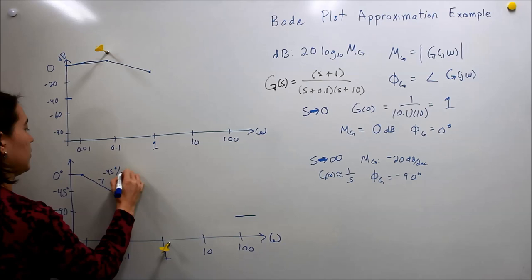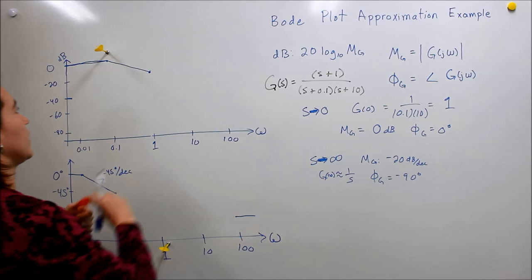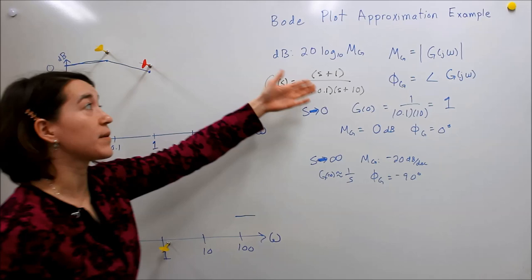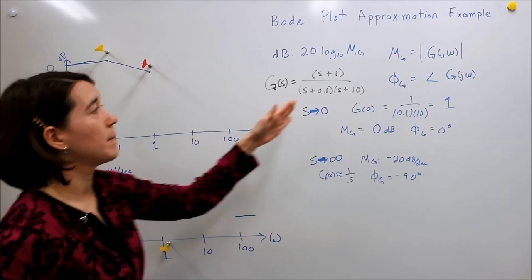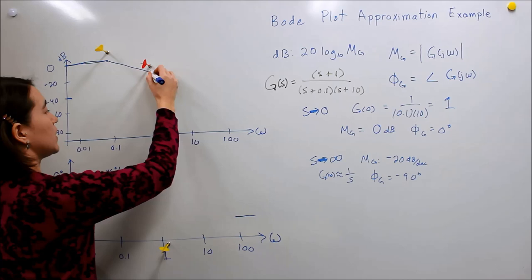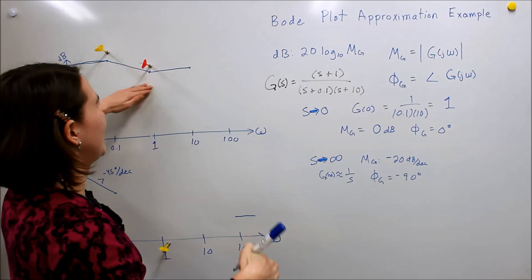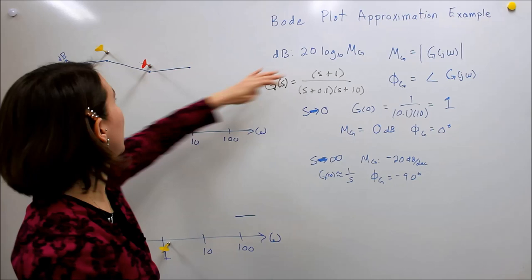Now we have the effect of the next feature: the zero at 1. In the magnitude, the zero does the opposite of the pole — it makes the magnitude increase by 20 dB per decade. So we have the pole contributing negative 20 dB/dec and the zero contributing positive 20 dB/dec — net zero. So between here and our next pole at 10, we see approximate stability, staying flat in magnitude until we hit the next pole.